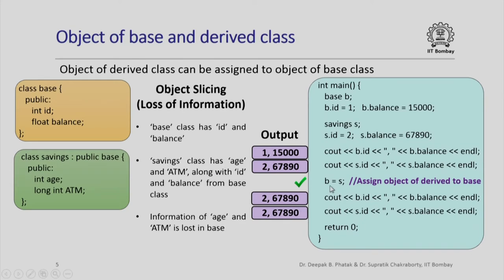When you assign an object of a derived class to an object of a base class, the additional data members in the derived class are sliced off or lost in this copy — this is called object slicing. This is to be expected if you think about this assignment in terms of the operator equal-to method of the base class: the default assignment operator for the base class can only copy values of id and balance from the right-hand side to the left-hand side.